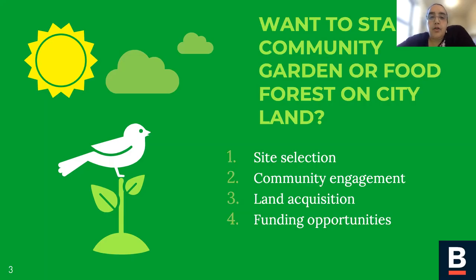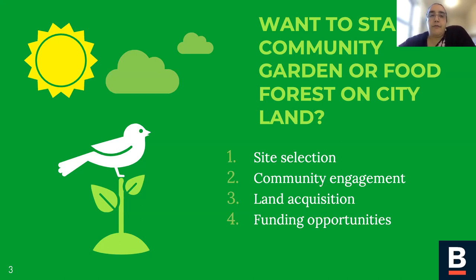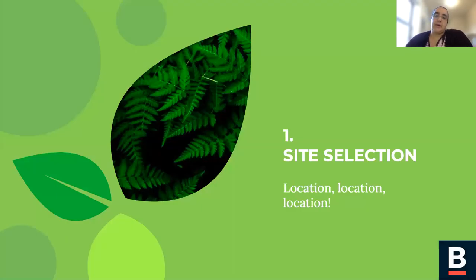If you're wanting to start a community garden or a food forest — which is another way of increasing community food security — we often see combinations of community gardens and food forests. If you want to do that, these are the four main parts of the process in Boston: site selection, community engagement, land acquisition, and then funding. I'm going to talk about each one of these step by step.